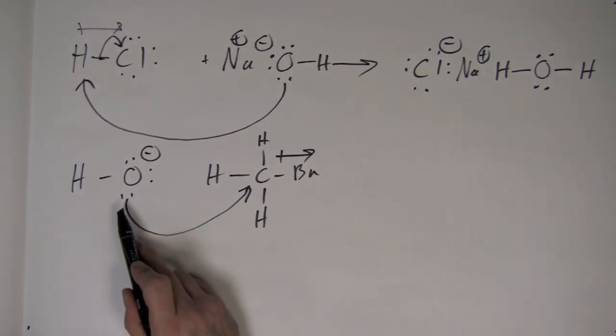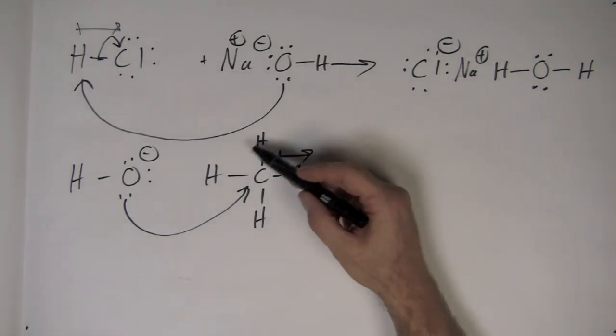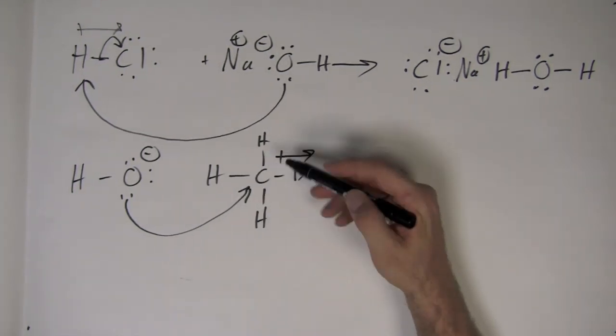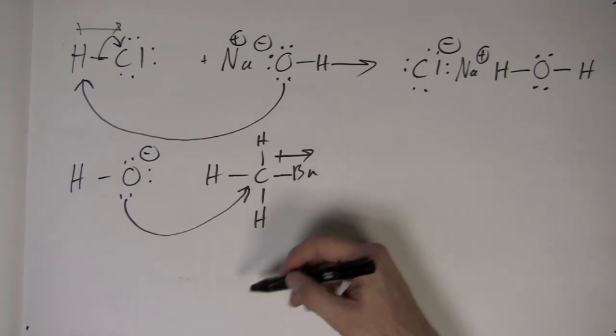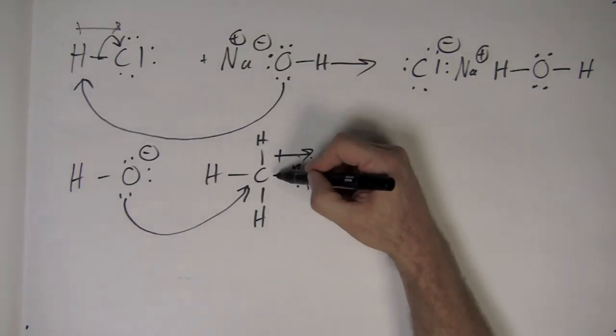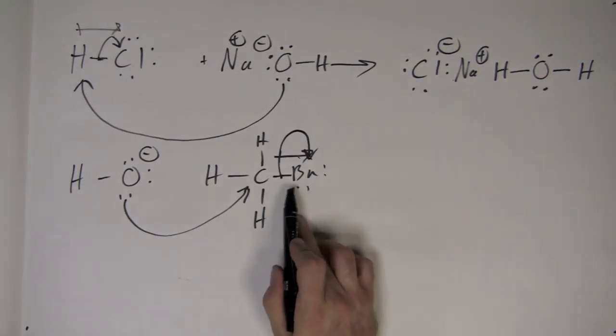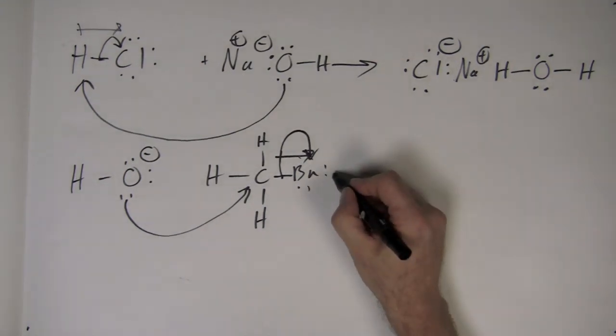Remember, there are consequences. Keep in mind the octet rule. As two electrons move into the carbon atom, which already has eight electrons, electrons must therefore move out from the carbon atom. Electrons from the bond between carbon and bromine move to the bromine atom.